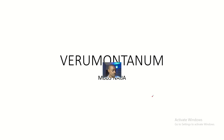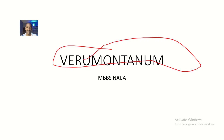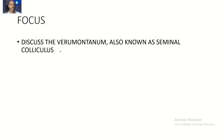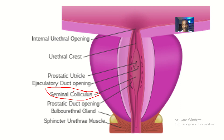In this lecture, we'll be covering a very rare concept: the verumontanum, also known as the seminal colliculus. We'll be looking at its location, its contents, and why we are studying it. In most diagrams you see the label 'seminal colliculus,' but most people don't know that seminal colliculus is also known as verumontanum.